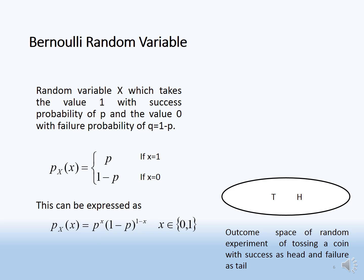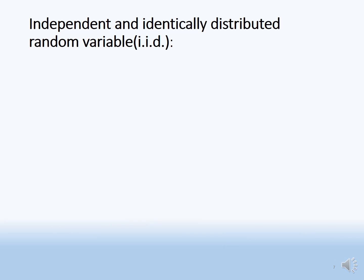Tutorial review: the outcome space contains the experiment of tossing a coin, with success as head and failure as tail, variables H and T. We map these to one and zero, with p as the success probability and 1 - p as the failure probability.